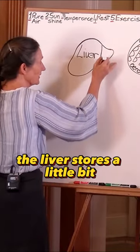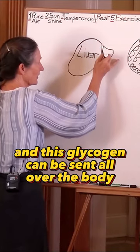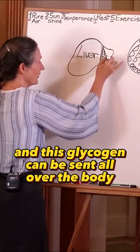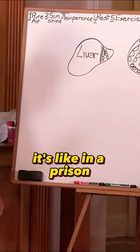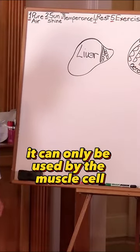By the way, the liver stores a little bit and this glycogen can be sent all over the body, whereas the glycogen that's in the muscle cell, it's like in a prison, it can only be used by the muscle cell.